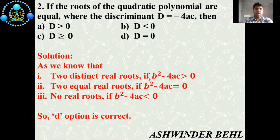Second question: If the roots of the quadratic polynomial are equal, where the discriminant D is equal to b² - 4ac, then four options are there: a) D greater than 0, b) D less than 0, c) D greater than or equal to 0, d) D is equal to 0.